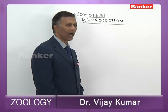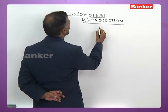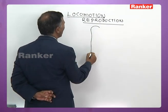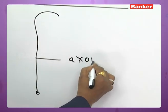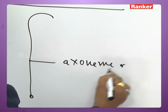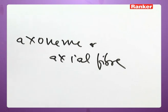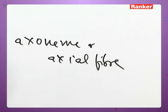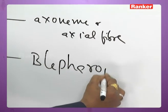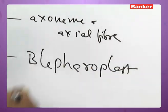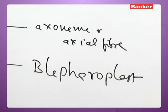That is the flagellum or a cilium — if you take a cross section, the flagellum or cilium has got a vibratile filament. This vibratile filament is called axoneme or axial fibre. This axoneme or axial fibre arises from the blepharoplast, which is also called basal granule, kinetosome, or basal body.